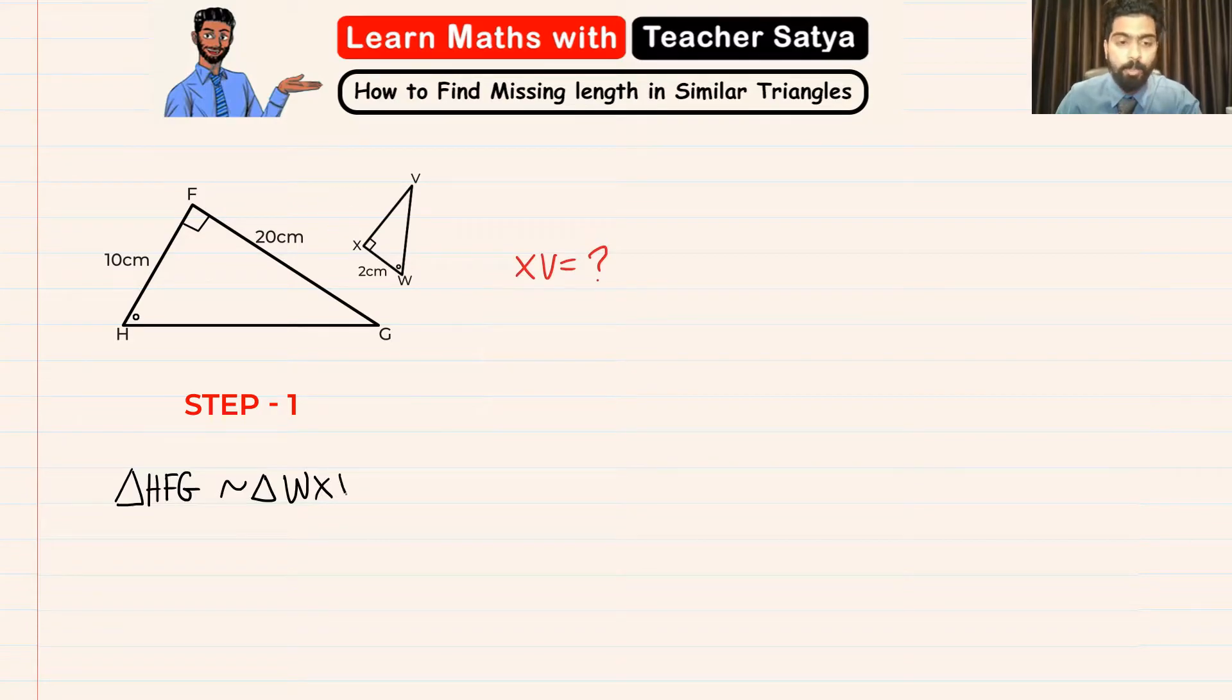So we are naming this triangle so we exactly know that our length HF is matching with WX, FG is matching with XV, and GH is matching with VW. Now from these triangles we can also see that our triangle WXV is a reduction of triangle HFG.